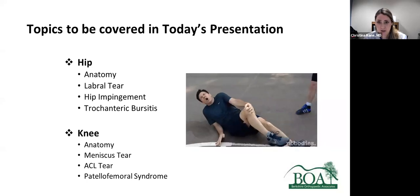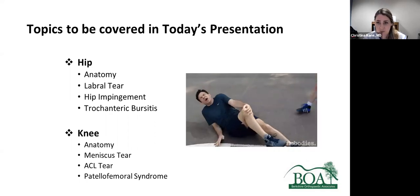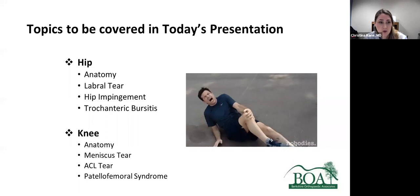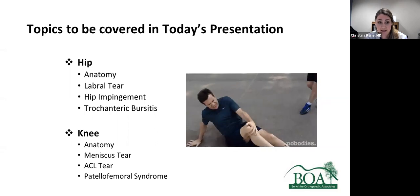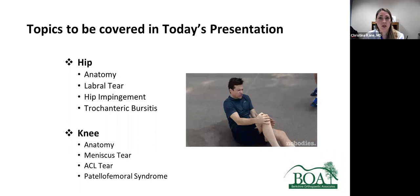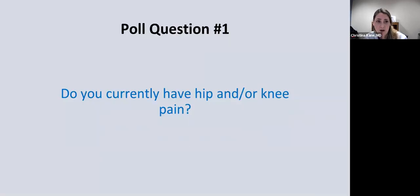My main focus is arthroscopic surgery of the shoulder, hip, and knee, and I also have a special interest in open shoulder surgery and shoulder replacements. Today I'll cover some common conditions of the hip and knee that I see frequently in clinic. I picked three common injuries for both the hip and the knee. We'll start with hip anatomy, labral tears, hip impingement, and trochanteric bursitis, then get into knee anatomy, meniscus tears, ACL tears, and patellofemoral syndrome. First, a poll question: do you currently have hip and/or knee pain?